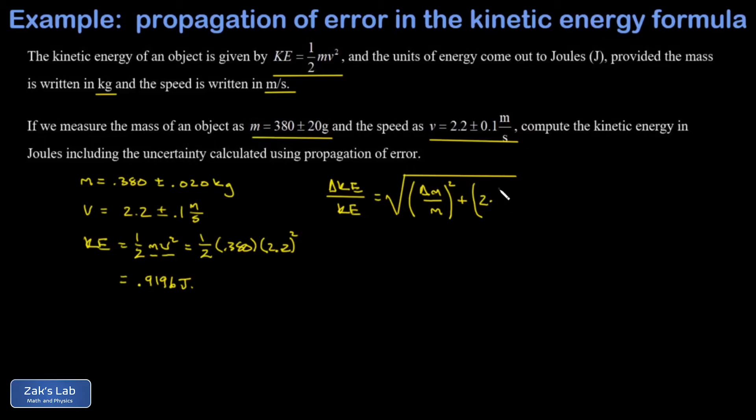We put our uncertainty for m in there—that was 0.02—and then m itself was 0.380. We square that, and then we add two times 0.1 for Δv over v itself, which was 2.2, and then we square that. So we're going to add those two squared terms, take the square root.